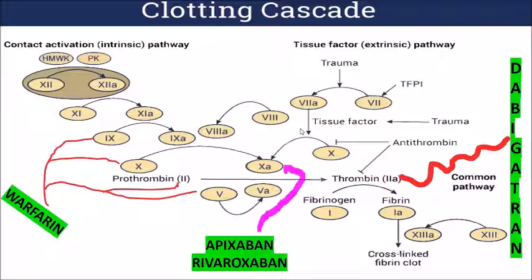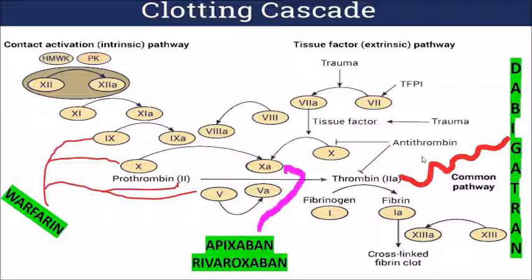Traditionally, warfarin was used to prevent deep vein thrombosis for anticoagulation. Warfarin targets vitamin K-dependent factors like factor 2, factor 7, factor 9, and factor 10, increasing the time it takes for clot formation. Whereas the newer anticoagulants like apixaban or rivaroxaban target activated factor 10, and dabigatran targets thrombin or activated factor 2. If you target any of these pathways, you block the conversion of fibrinogen to fibrin, increasing the clotting time.